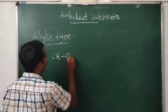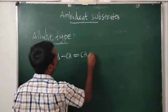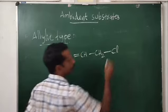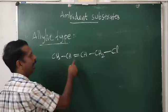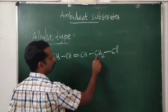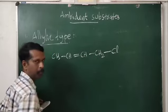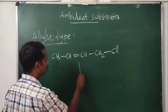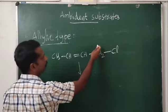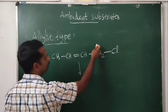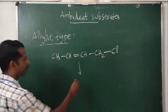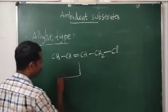Look at how an allylic-type compound can act as an ambient substrate: CH₃–CH=CH–CH₂Cl. This is an allylic-type halide where the leaving group is attached to an SP3 carbon which is attached to an SP2 carbon. If the reaction proceeds via SN1, the first step is the formation of a carbocation, and the nucleophile will come and attack on that carbocation.